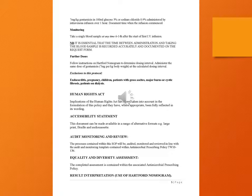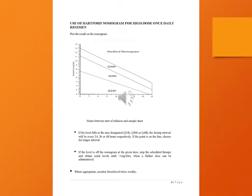Result interpretation — use of Hartford nomogram for high-dose once-daily regimen: hours between start of infusion and sample draw. If the level falls in the area designated Q24h, Q36h, or Q48h, the dosing interval will be every 24, 36, or 48 hours respectively. If the point is on the line, choose the longer interval. If the level is off the nomogram at the given time, stop the scheduled therapy and obtain serial levels until less than 1 mg per litre, when a further dose can be administered.